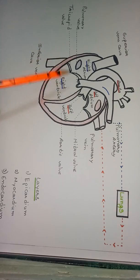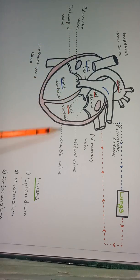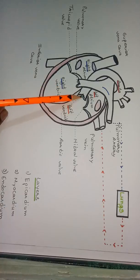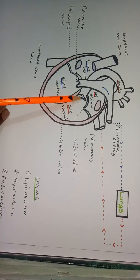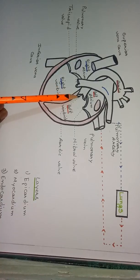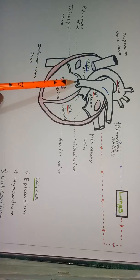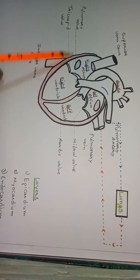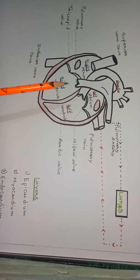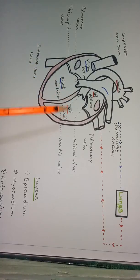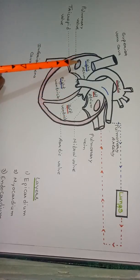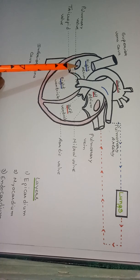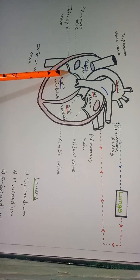This one is known as the mitral valve, this one is known as the tricuspid valve, these are the pulmonary valves, and these are the aortic valves. The aortic valves are present between the aorta, that's why they are known as aortic valves. The pulmonary valves are present in between the pulmonary artery, that's why they are known as pulmonary valves.